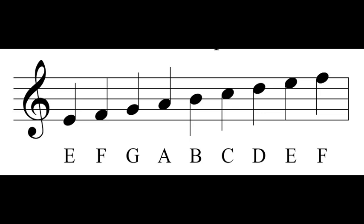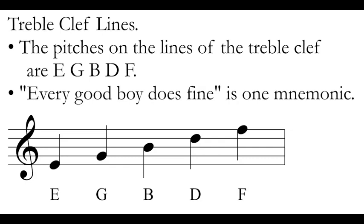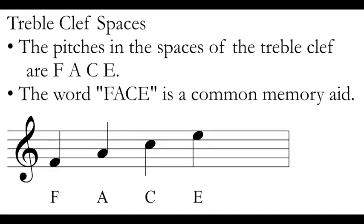Let's talk about some common ways to remember these note positions so you don't have to count from G every time. The lines of the treble clef, from bottom to top, are E, G, B, D, and F. A common mnemonic is 'Every Good Boy Does Fine.' If you search treble clef mnemonics online, you'll find others — as long as you remember E, G, B, D, and F for the lines. For our spaces in the treble clef, from lowest to highest, we have F, A, C, and E — which spells the word FACE. That's another common way to remember them. FACE spells out our spaces in the treble clef.